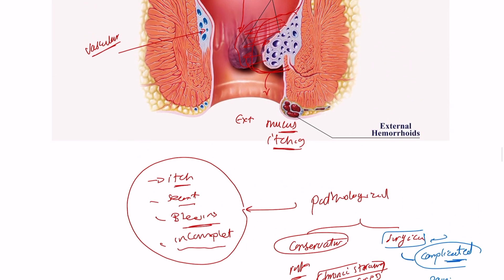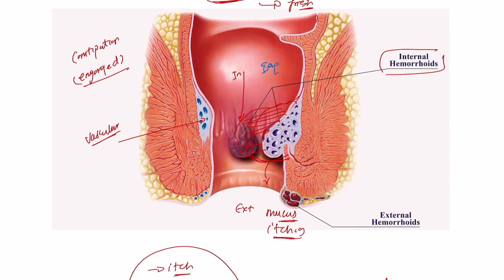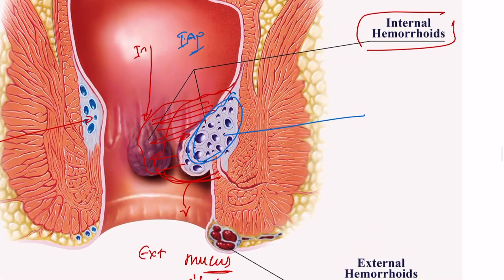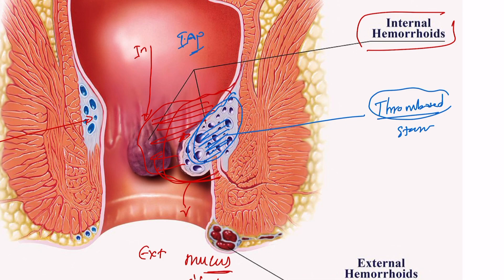Talking about complications: with chronic straining, intra-anal pressure can increase significantly and may lead to thrombosis inside the vascular cushion — this is called thrombosed haemorrhoids. The pathophysiology is a significant increase in intra-anal pressure leading to compression, venous stasis, and thrombus formation. The patient presents with sudden severe anal pain and needs to go to theatre immediately to excise the thrombosis, otherwise necrosis and profound complications may result.